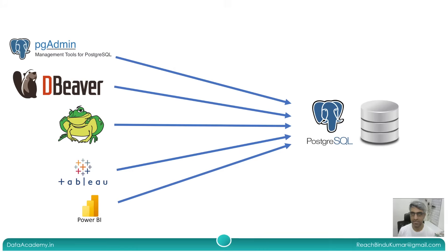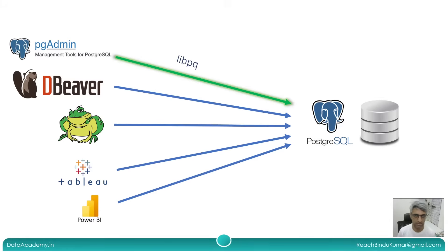But one of these clients is unlike the other. If you guessed pgAdmin, you are right. pgAdmin is a database client developed by the same community that develops the PostgreSQL database. pgAdmin uses a library called libpq to connect to PostgreSQL. You can think of libpq as a native language that PostgreSQL understands very well, giving you the best performance and best compatibility. Whereas the other clients — DBeaver, Toad, Tableau, and Power BI — they don't use libpq; they use a JDBC driver released by PostgreSQL.